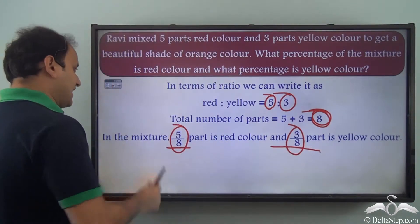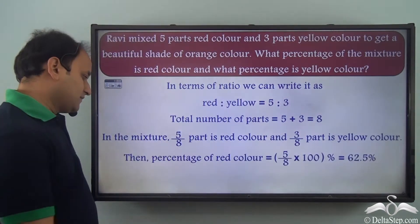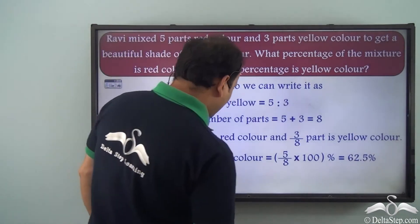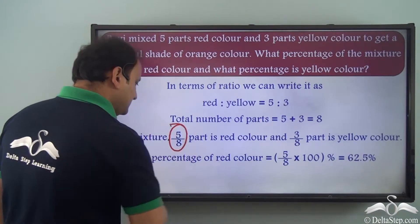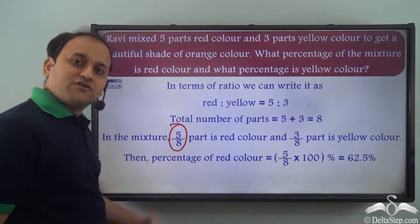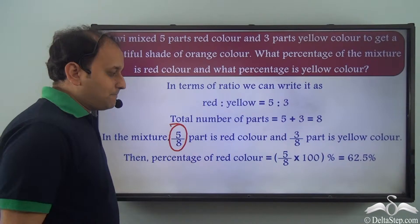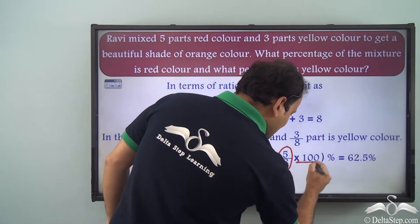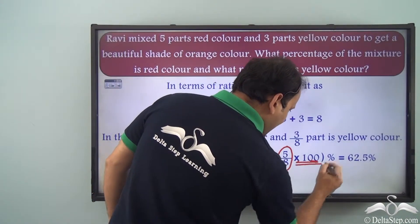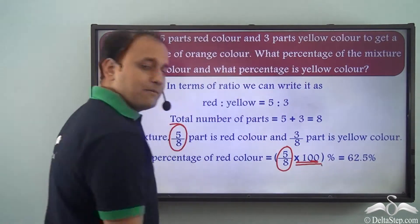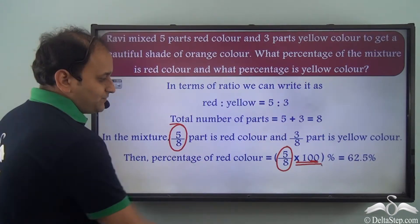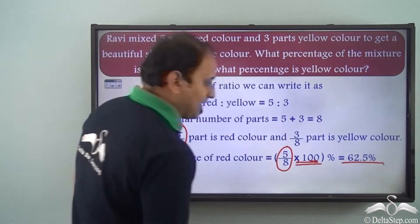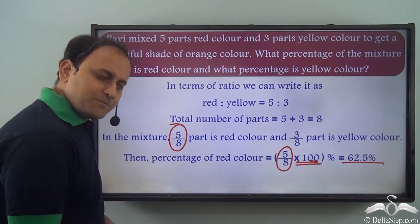The percentage of red color will be this fraction converted into percentage. So 5 by 8 into 100, and we place a percent symbol beside it. When we calculate this, we get 62.5 percent.